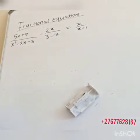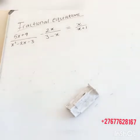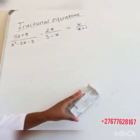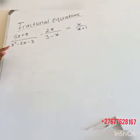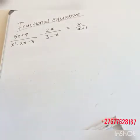So today we have 5x plus 9, all divided by x squared minus 2x minus 3, minus 2x over 3 minus x, is equal to x over x plus 1. So for us to solve this one, we need to first factorize x squared minus 2x minus 3.